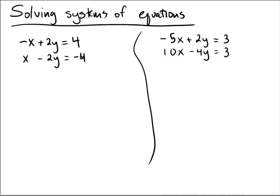On the left our first example is the system consisting of negative x plus 2y equals 4 and x minus 2y equals negative 4.